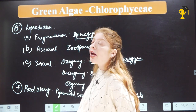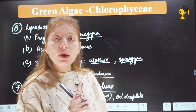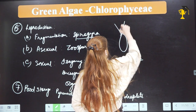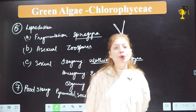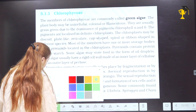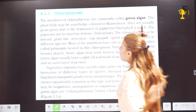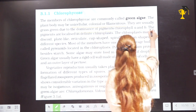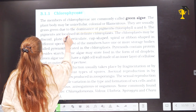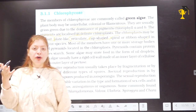If the gametes are motile, they can have flagella ranging from 1 to 8 in number, but the flagella will be equal in length and apical in position. Reading from NCRT: green algae are commonly called green algae because of the dominance of chlorophyll A and B. These pigments are localized in the chloroplast, and chloroplasts can be discoid, plate-like, reticulate, cup-shaped, spiral, or ribbon-shaped.